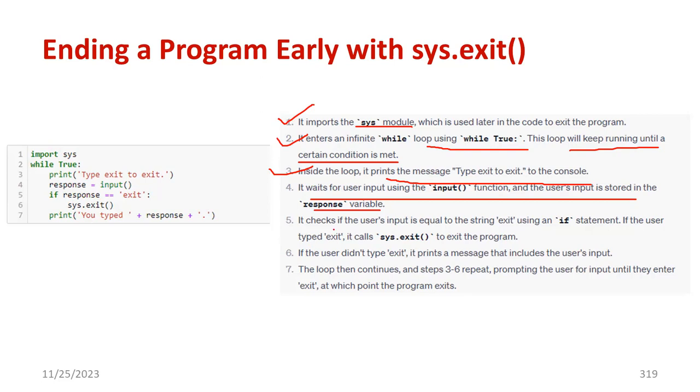If the user types exit, it immediately exits the program because sys.exit is operated. If the user didn't type exit, it prints a message that includes the user input. The loop will continue whenever the user hasn't typed exit.